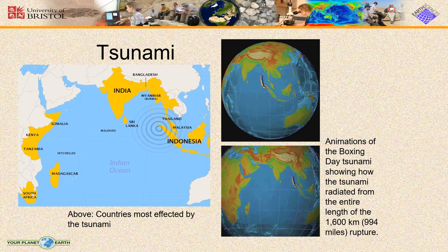Now, what is a tsunami? A tsunami is a series of waves in a water body caused by the displacement of a large volume of water, generally in an ocean or a large lake. It can be caused by earthquakes, volcanic eruptions and other underwater explosions including detonations, landslides, and glacier carvings.